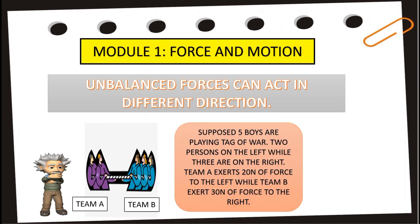Also, unbalanced forces can happen in different directions. For example, suppose five boys are playing tag of war. Two persons on the left while three are on the right. Team A exerts 20 newtons of force to the left while team B exerts 30 newtons of force to the right. Now, what is the net force?